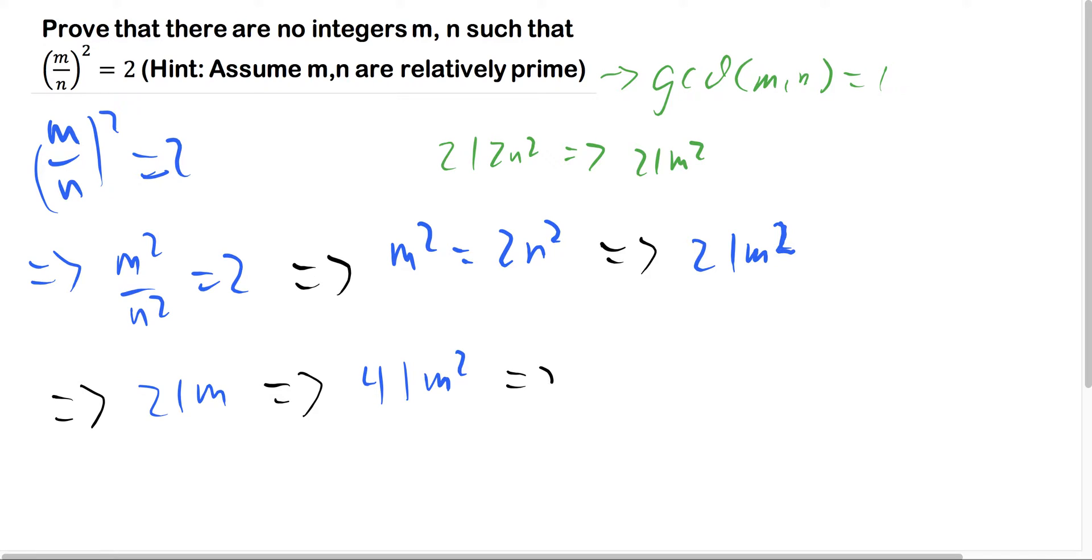And if we keep going in this pattern, you'll see this proof come out here. Then 4 must divide 2n squared.